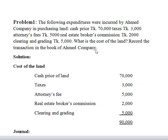The cost of the asset is usable. We will calculate the cost of land. The cash price is $70,000. Tax is $3,000. Attendance fees is $5,000. Real estate broker is $2,000.